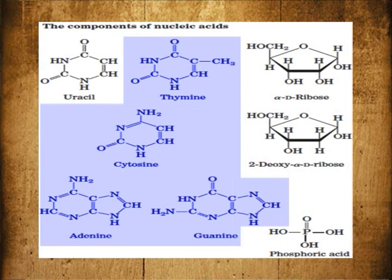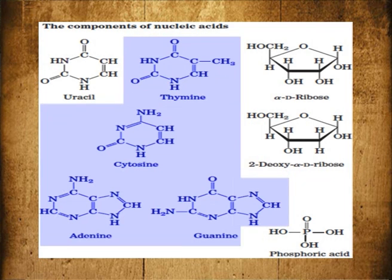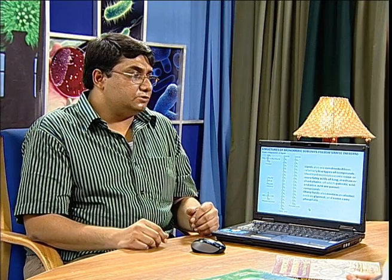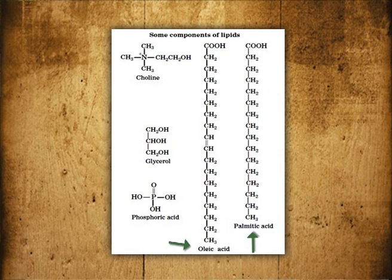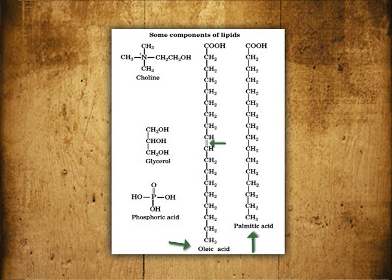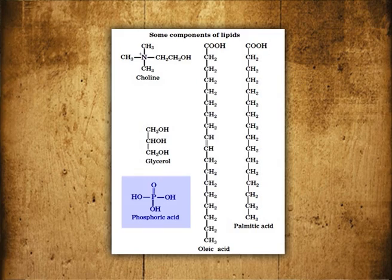Deoxyribonucleotides, the components of DNA, consist of adenine, guanine, cytosine and thymine but not uracil, which individually combine with the deoxyribose sugar and the phosphate. Lipids are also constructed from relatively few types of compounds. Most lipid molecules contain one or more fatty acids, which are hydrocarbon chains of varying length attached to a carboxylic acid group at the end. All of the different fatty acids are derived from palmitic acid, which has a saturated chain, and oleic acid, which has one unsaturation. Some lipids may contain alcohol like glycerol and some can contain a phosphate group.